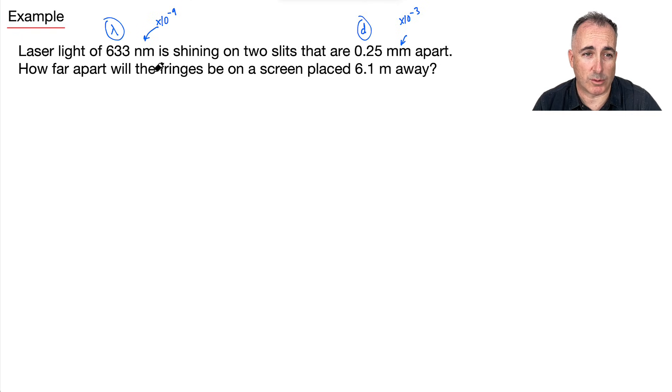The question is, how far apart will the fringes be? The fringe separation, we want s. That's what we're actually looking for here. We want s. And on the screen that is 6.1 meters away, that is capital D. That's this one. So really, it's just a matter of using this equation. So how does the equation go again? It goes s equals lambda capital D over lowercase d. I'm just going to put in my numbers. I didn't even have to rearrange. If I'm looking for s, it's actually pretty straightforward.